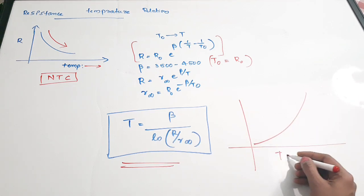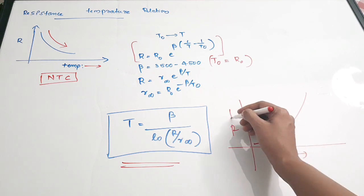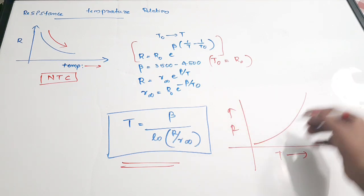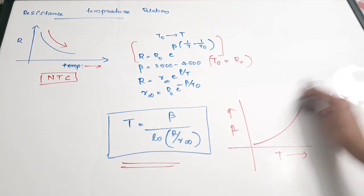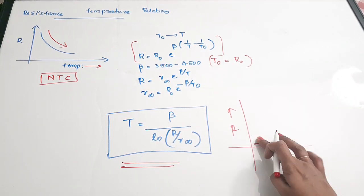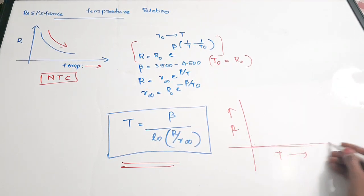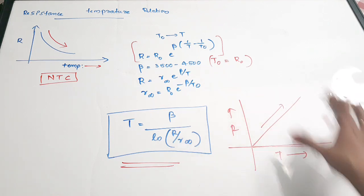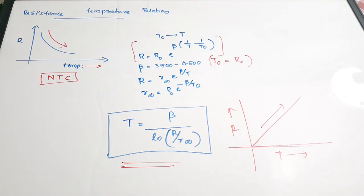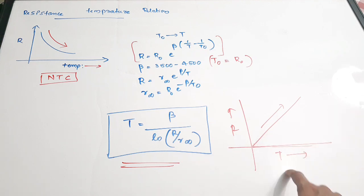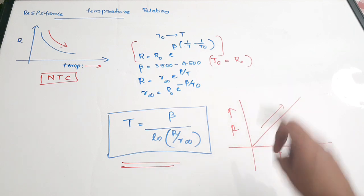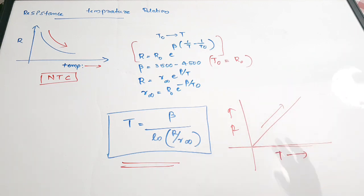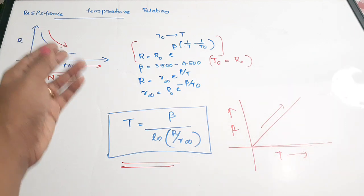For a PTC device, as temperature increases, resistance also increases — again a non-linear relation. For RTDs or resistance temperature detectors, there is an almost linear relation between temperature and resistance. That is the key difference between thermistors and RTDs: RTDs have a linear relationship, while thermistors have a non-linear curve.